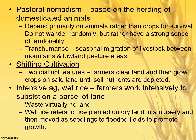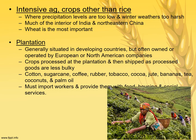Intensive subsistence with wet rice means farmers work intensively to subsist on a single small parcel of land. Wet rice refers to rice planted on dry land in a nursery, then moved as seedlings to flooded fields to promote growth. Rice grows in these flooded fields, which is why it predominates in areas receiving heavy monsoon rainfall like South Asia and Southeast Asia. Intensive subsistence with other crops — usually wheat, which requires less water — is found in the interior of northern India and northeastern China.